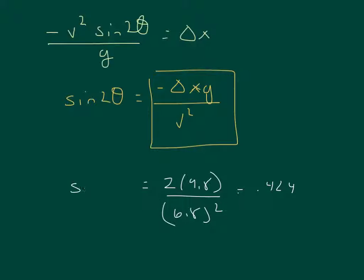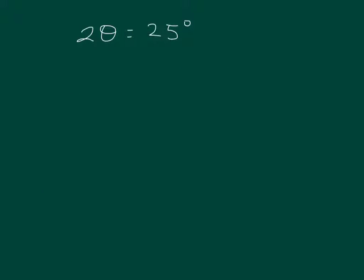This equals .424. Remember that sine 2 theta equals .424. So 2 theta is going to equal the arc sine of .424, and I get 2 theta equaling 25 degrees. So I have 2 theta equals 25 degrees, then theta equals 25 over 2, and thus it's about 13 degrees, or 12.5 degrees. This seems to be the answer.